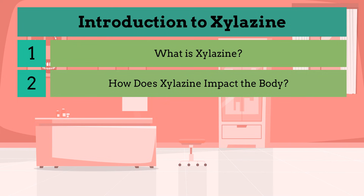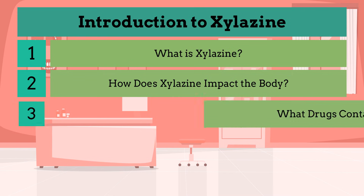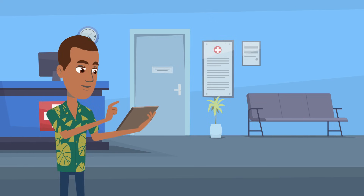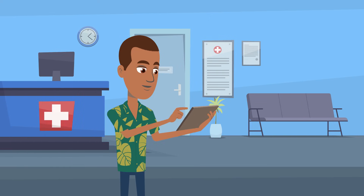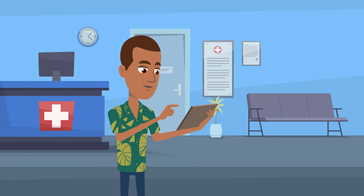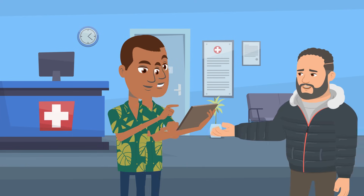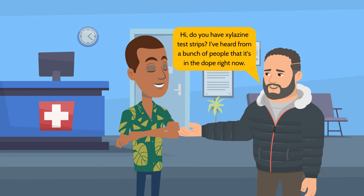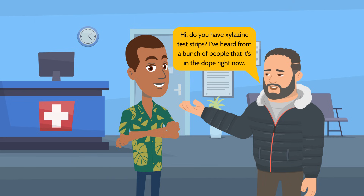Xylozine isn't a drug people usually seek out, but it's ending up in more and more substances. In this next section, we'll talk about which drugs xylozine is commonly found in and how people can check for its presence. Xylozine is most often added to heroin and fentanyl, usually without the knowledge of those who are buying and using the drugs. Xylozine can sometimes also be found in other drugs, including stimulants like cocaine and methamphetamine, and even pressed pills, which are counterfeit versions of drugs like Xanax or Percocet.